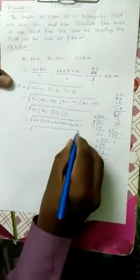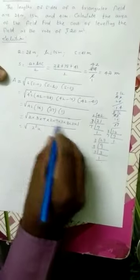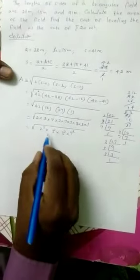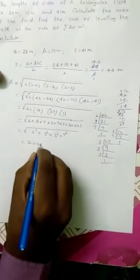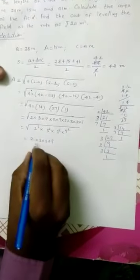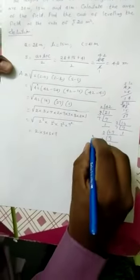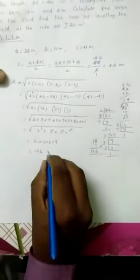The next step: 2 squared times 3 squared times 7 squared. Simplifying: 2 times 3 squared. 2 times 3 times 3 times 7. 2 times 3 is 6, 6 times 3 is 18, 18 times 7. 7 times 8 is 56, plus 5 is 12. The area is 126 meter square.